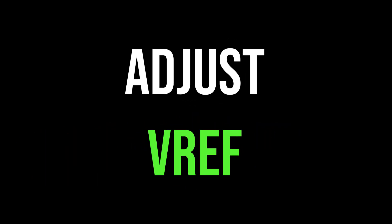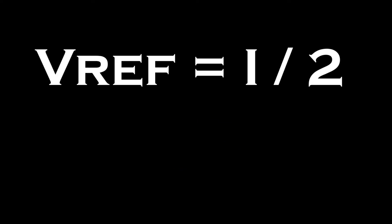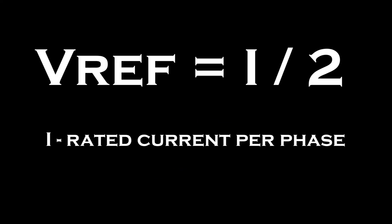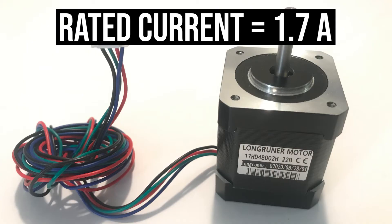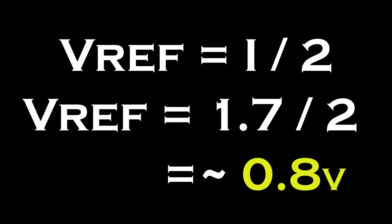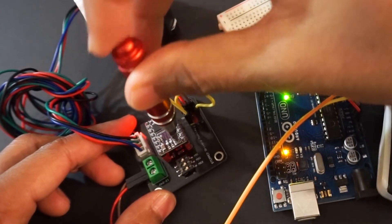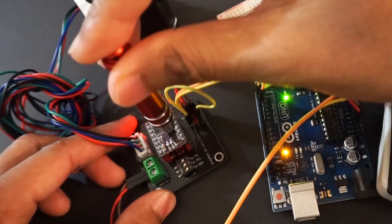Now we need to set the current limit for this driver. For that we need to adjust the Vref for this driver. The formula for Vref is I/2 where I is rated current for this motor per phase. The rated current for this motor is 1.7 ampere, so we need to set the Vref as around 0.8 volt. Adjust this potentiometer so that voltage is around 0.8 volt.